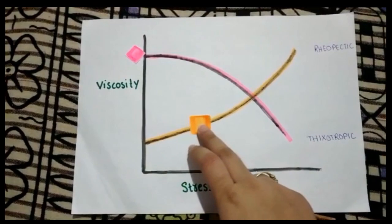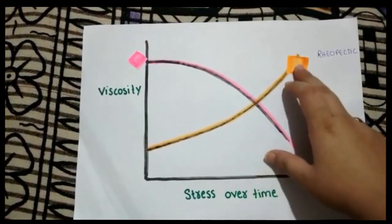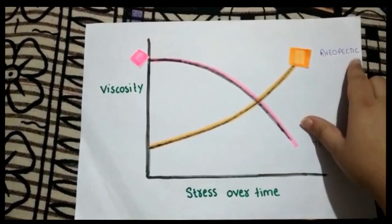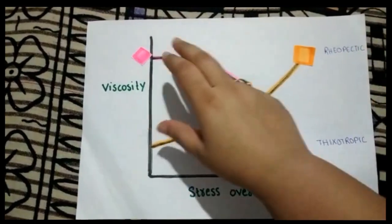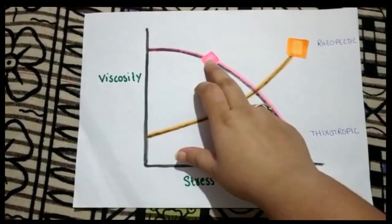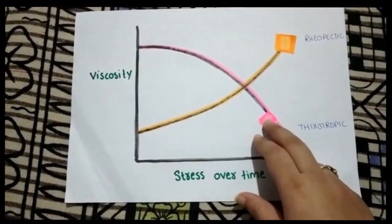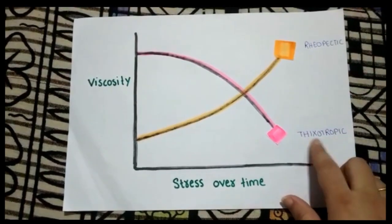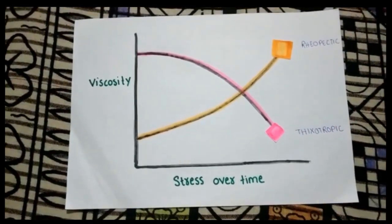The fluids whose viscosity increases with time and stress are called rheopectic or time thickening fluids. The fluids whose viscosity decreases with time and stress are called thixotropic or time thickening fluids.